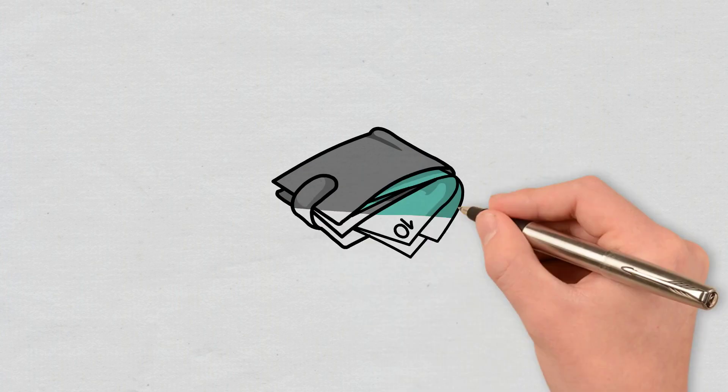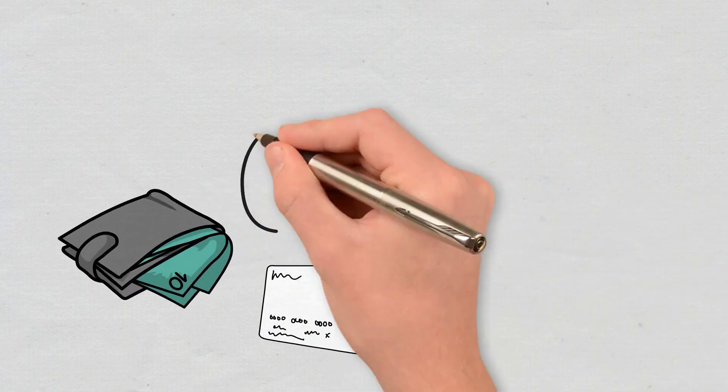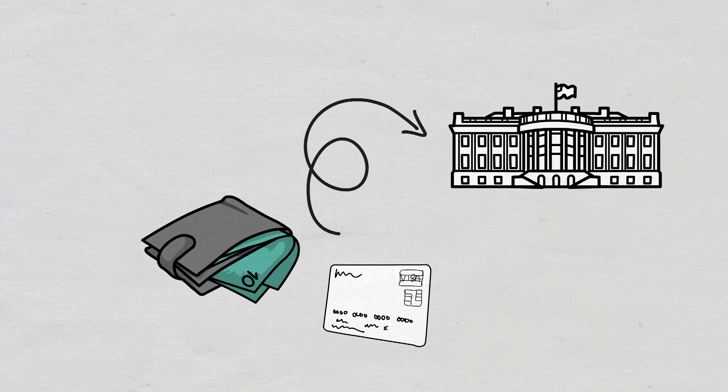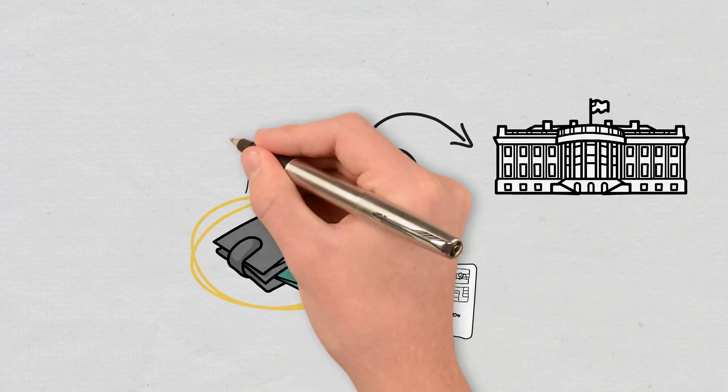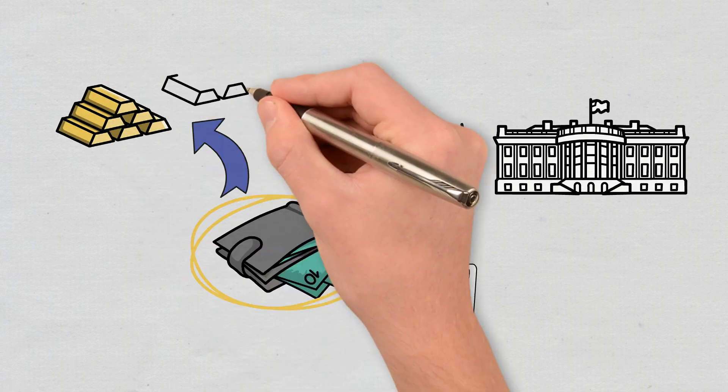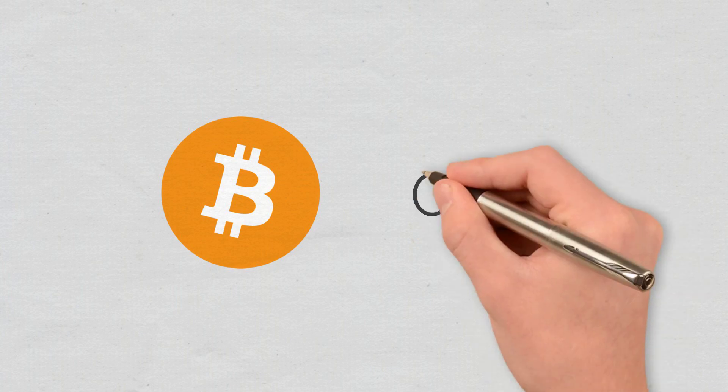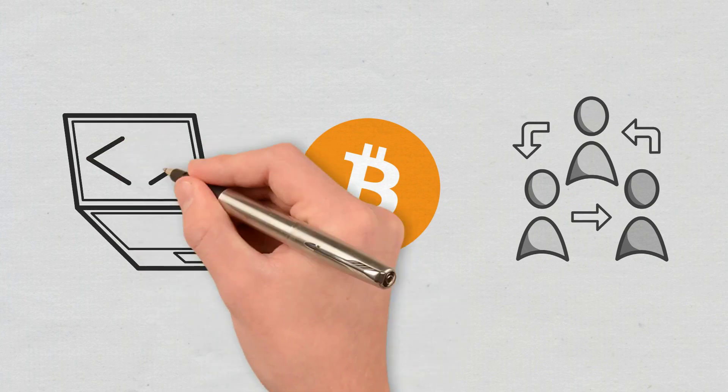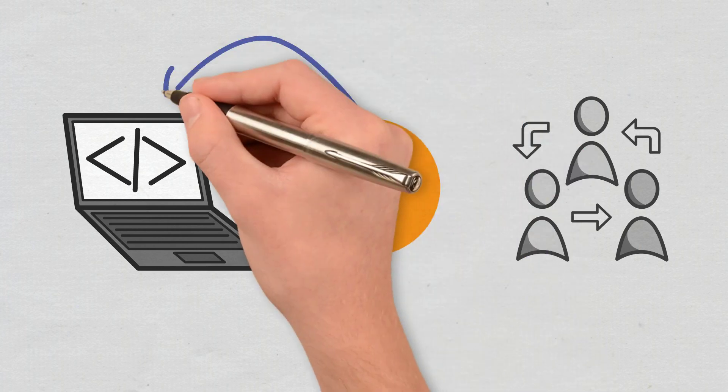Fiat money, which is the money you have in your wallet or on your credit card, is supported and regulated by the government. In the past, money was solely representative, meaning money in circulation corresponded to reserves of gold or silver. Instead, Bitcoin relies on peer-to-peer technology, which is a network of people and software-driven cryptography. This means that Bitcoin is backed not by gold or silver, but by code.